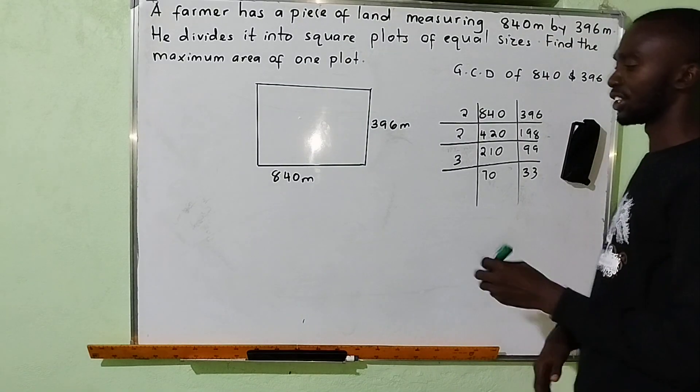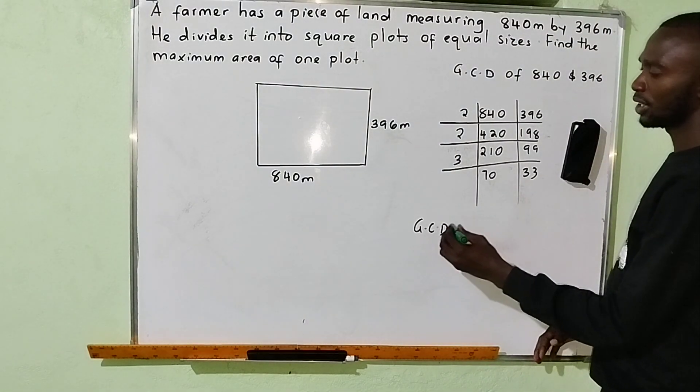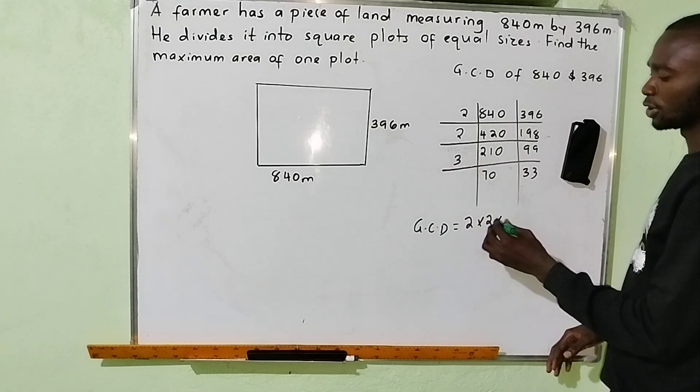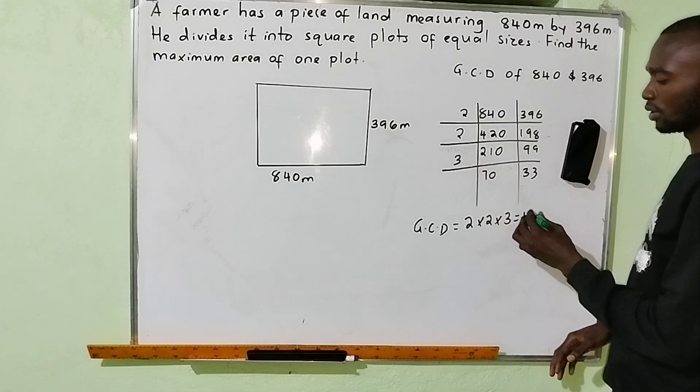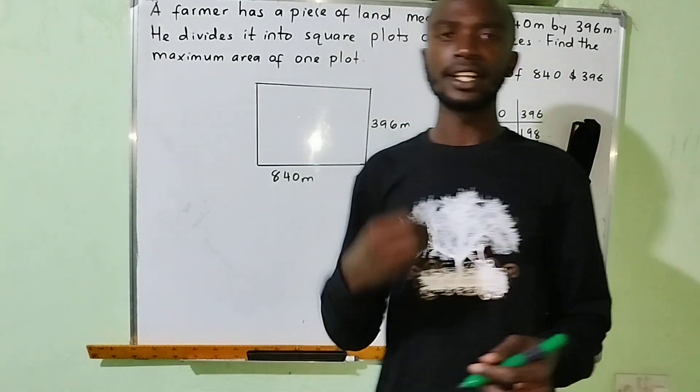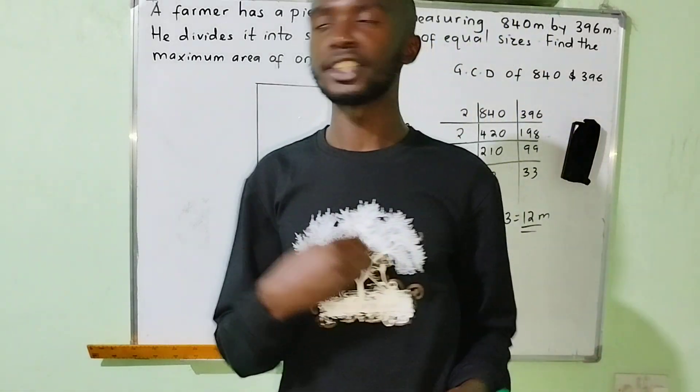So the GCD is equal to 2 multiplied by 2 multiplied by 3, which gives you 12 meters. So this is the GCD, which means that the length of this square plot is going to be 12 meters.